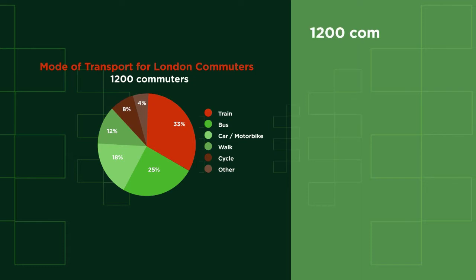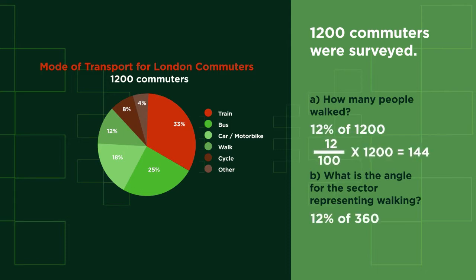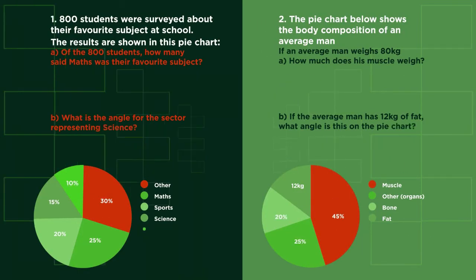Can you find how many people walked and what angle this is? Pause the video and work it out. Did you get 144 people and 43.2 degrees? Here are some more questions for you to do. Pause the video, work them out and click play when you're ready. How did you get on with these questions?